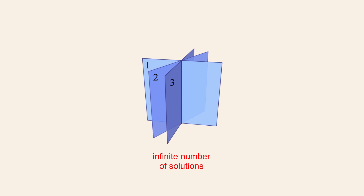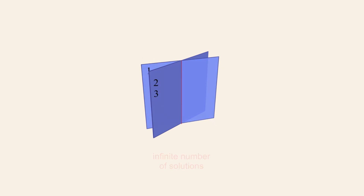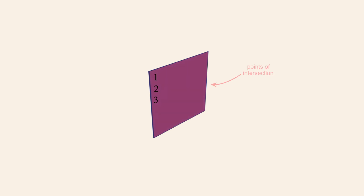The third plane does not necessarily have to be distinct from both of the other planes. If the third plane is identical to one of the other two planes, then the points common to all three planes are still represented by the same line of intersection and the system will have an infinite number of solutions. An infinite number of solutions will also exist if a system consists of three identical planes — any point which lies on one plane is common to all three planes, so the system has an infinite number of solutions corresponding to every point on the plane.